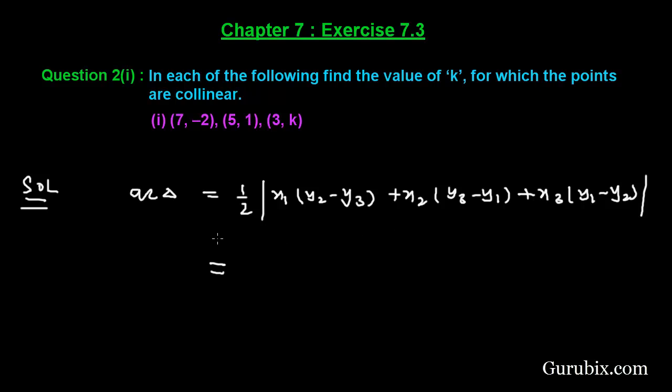First of all we shall find the area of the triangle. That is 1 over 2 mod x1 is 7, y2 is 1, y3 is k, then it will be 1 minus k plus x2 is 5, y3 is k.